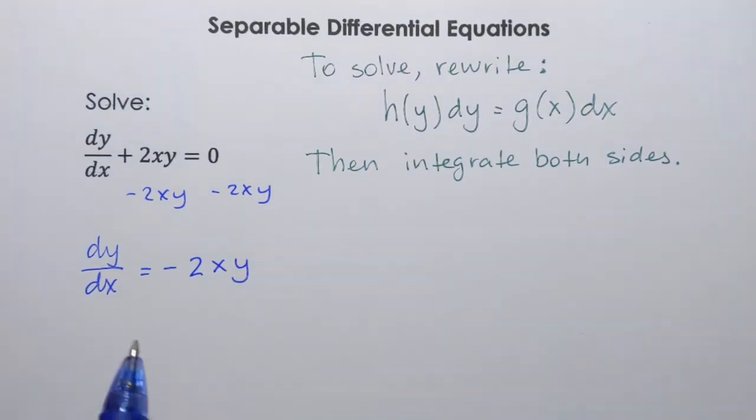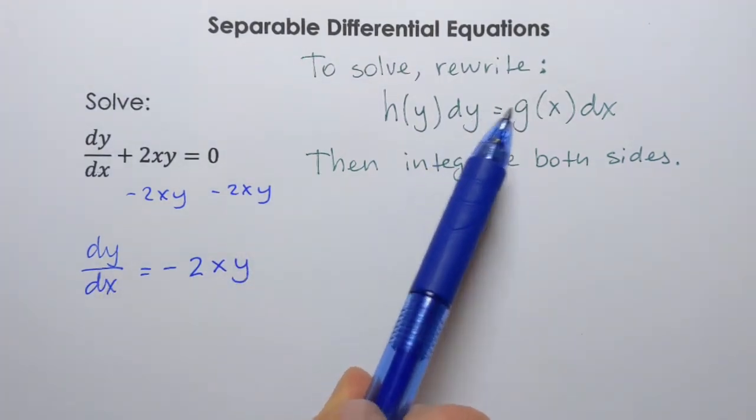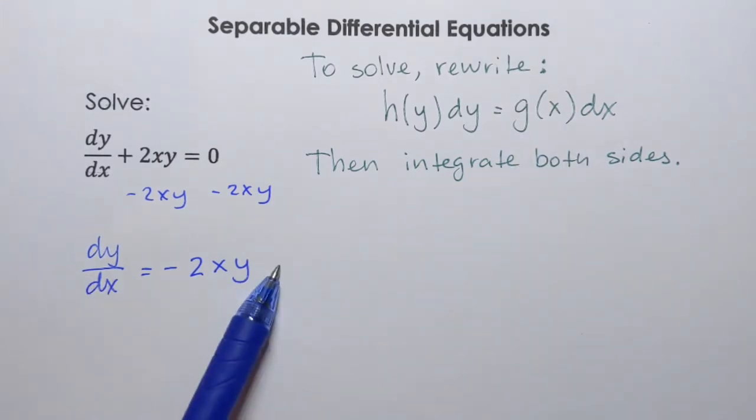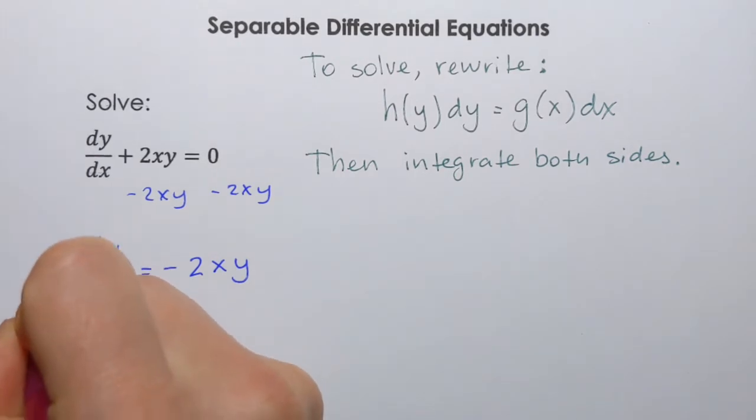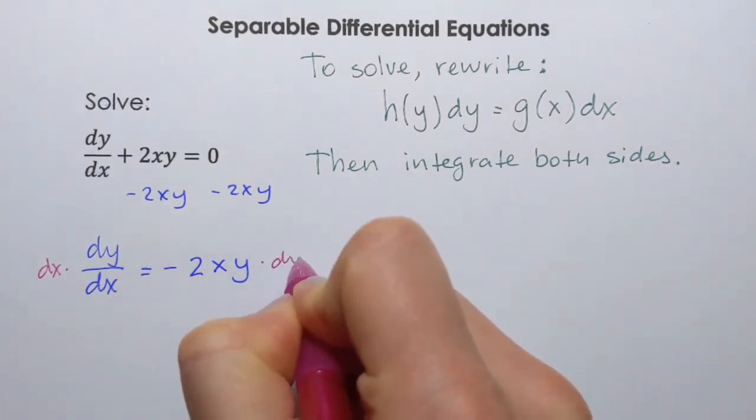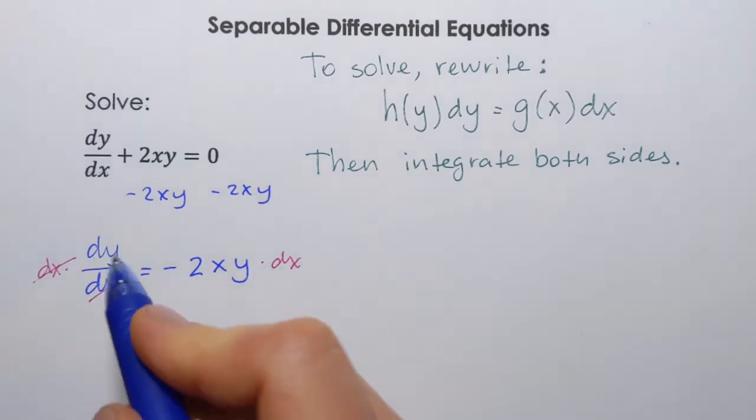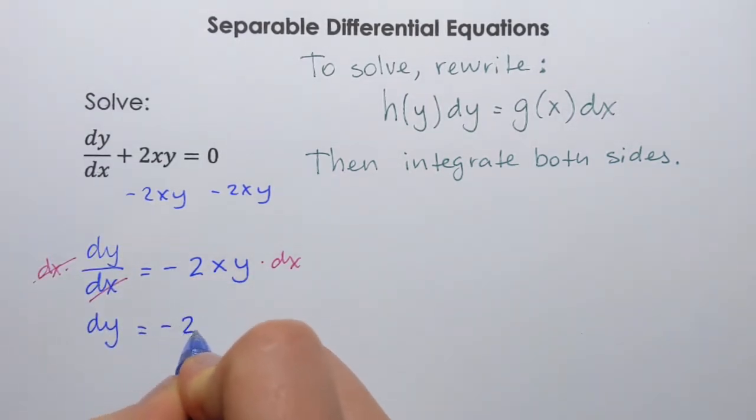And since my goal is to have differential dy on one side and differential dx on the other side, what I'll do, I'll multiply by dx on both sides. This way I'll have dy equals negative 2xy dx.